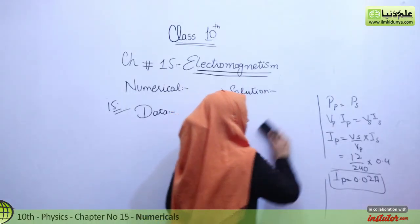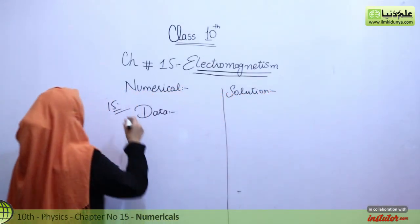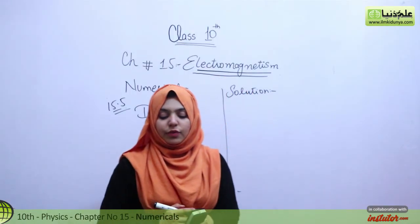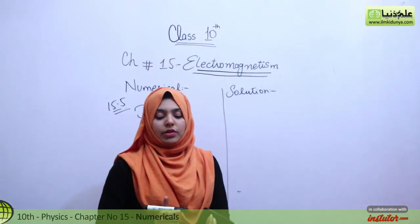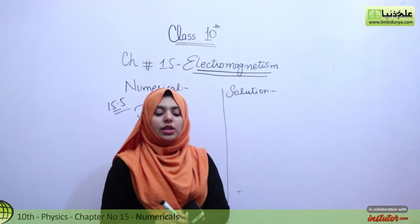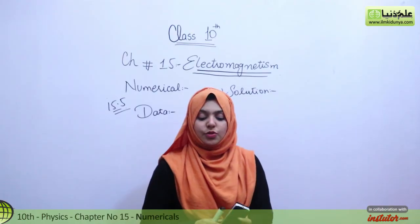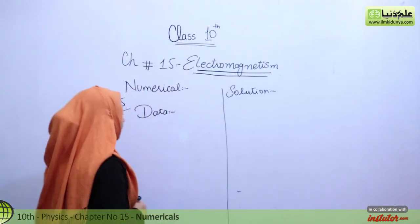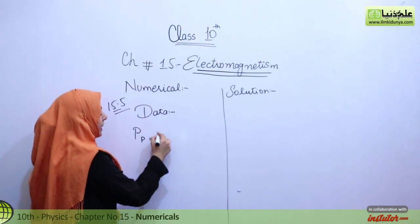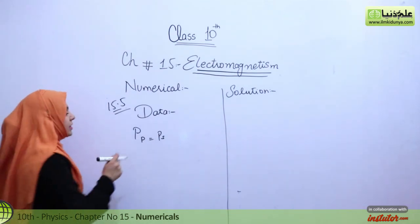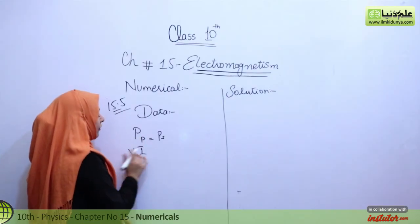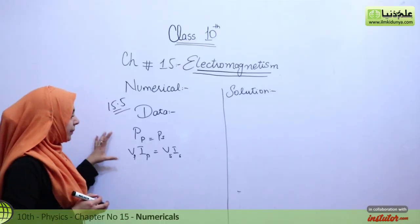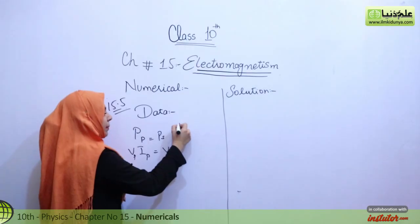Now numerical number 15.5: a power station generates 5,000 megawatts of electric power which is fed to the transmission line. What current would flow in the transmission line if the input voltage is 250 kV? Power is given and the initial voltage (primary) is given, but we need to find the transmission current IP ourselves. We use the formula: power in primary equals power in secondary, where P equals V times I.